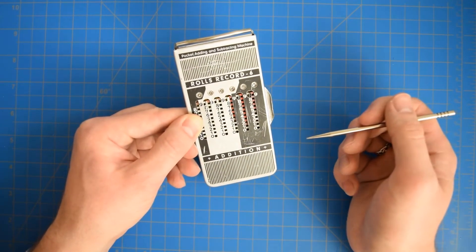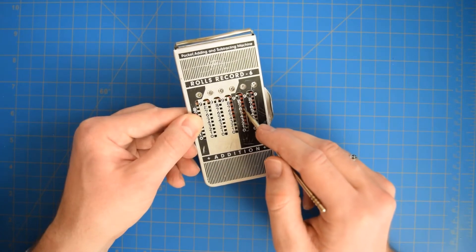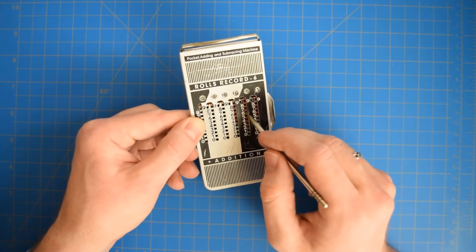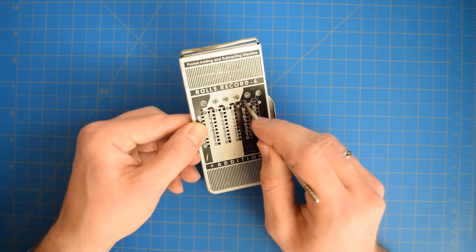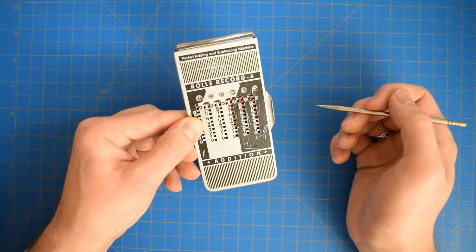But what if we wanted to add a bigger number? Maybe we want to add 60. If we want to do that, we take it and then we go in the opposite direction. We go up and around. There we go, 745.